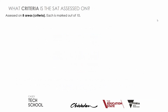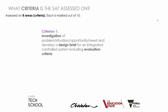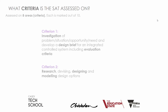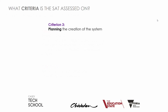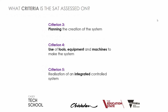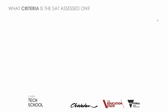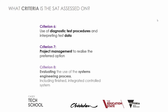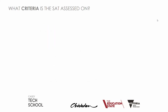It's assessed on eight criteria. First is the investigation — designing a design brief. The second part is researching and modelling different options. The third part is planning for your project. The fourth is your use of tools and equipment to build it. The fifth is actually realising it — finishing it. Criterion six is using diagnostic test procedures. Seven is how you use project management skills. And eight is your final evaluation of the project.